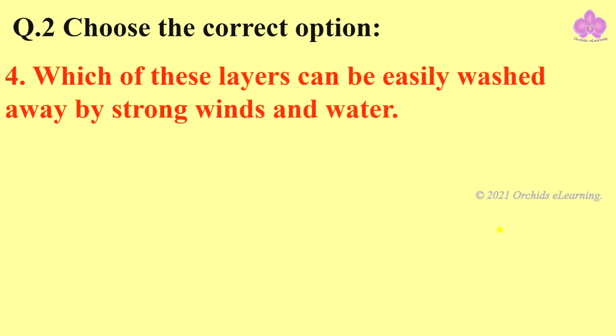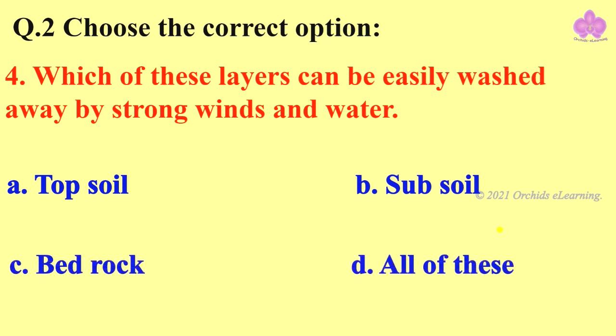Fourth one: which of these layers can be easily washed away by strong winds and water? Option A: topsoil. B: subsoil. C: bedrock. And D: all of these. And the answer is A, topsoil.